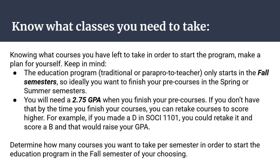Also know that you're going to need a 2.75 GPA when you finish all of your pre-courses in order to be accepted into the program. If you have a lower GPA, you can retake courses where you scored lower. For example, if you made a D in sociology, you could retake it and make a B to raise your overall GPA. You'll want to allot a semester to be able to do that.